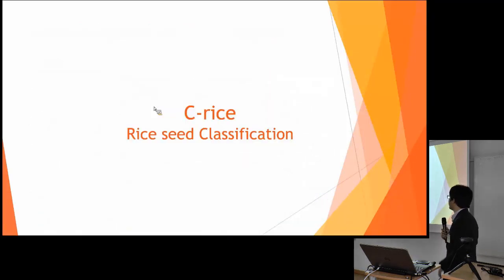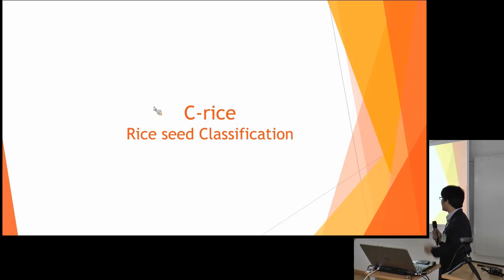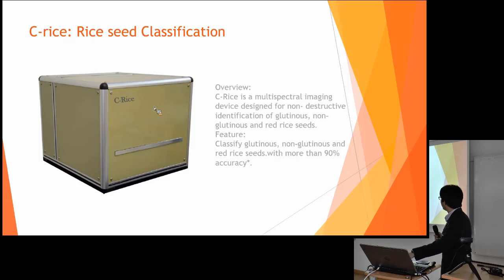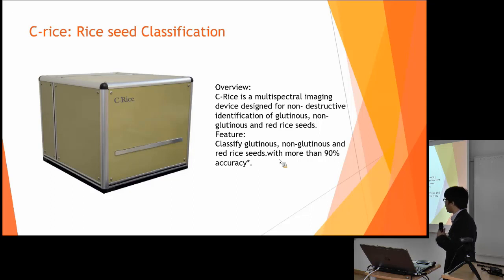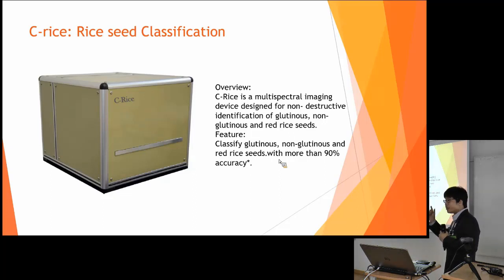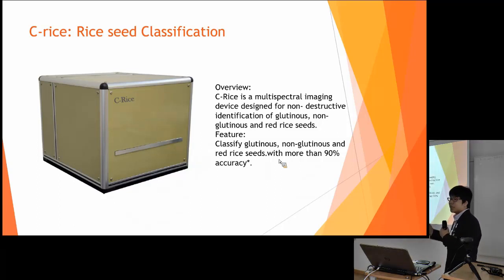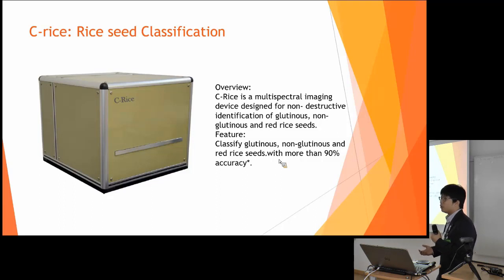The next item in the pipeline is rice seed classification. In Thailand, we classify rice seed into three classes: cutaneous, non-cutaneous, and red rice seed. When you want to classify these three types, you have to break the outer part of the rice seed and look at the grain inside. For non-cutaneous, the grain is very clear in light, but for the red rice seed, it is less transparent. However, this is a destructive method and wastes the sample.